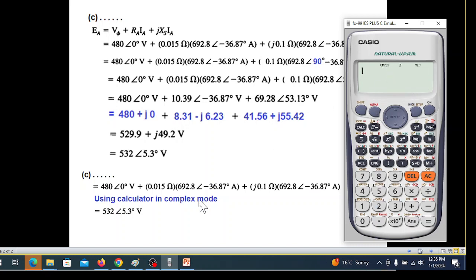Now we can enter these values. 480 angle 0 - we press shift for the angle sign, then 0, then plus. Bracket 0.015 bracket close, then bracket 692.8 angle minus 36.87 bracket close.